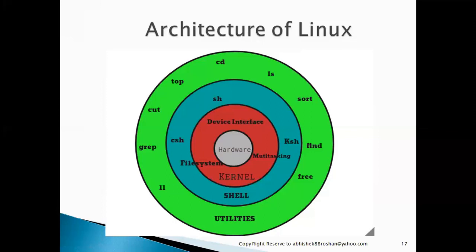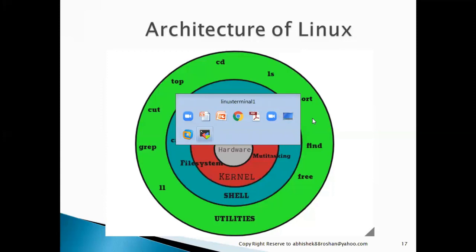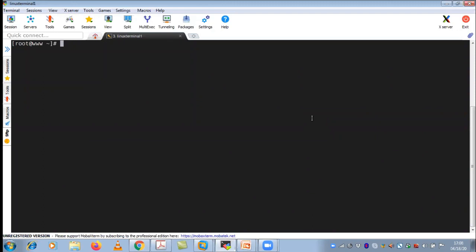In Linux, you don't need to install any third-party software if you want to know the hardware information. You don't need to go to the data center to check how much RAM or disk you have. You should be able to get that information from your terminal itself — the CLI, that is your command line interface. I'll be showing you the lab work simultaneously as I explain the theory.